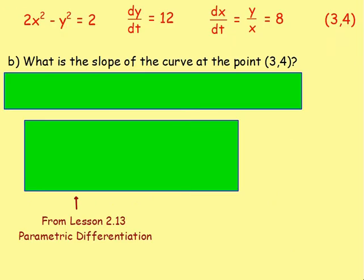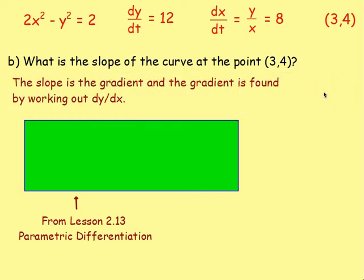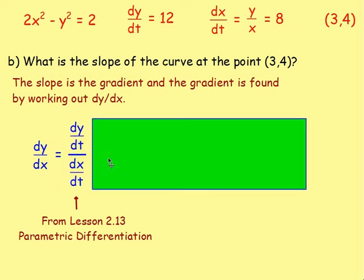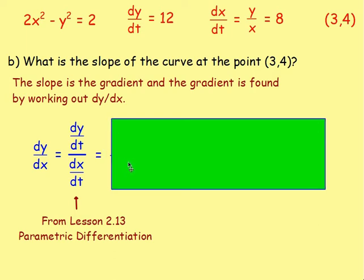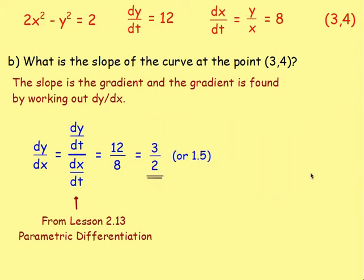For Part B, we need to find the slope of the curve at the point (3, 4). The slope is the gradient, found by the first derivative dy/dx. Recalling from Chapter 2, Lesson 13 on parametric differentiation: dy/dx = (dy/dt) ÷ (dx/dt). We have dy/dt = 12 and we just worked out dx/dt = 8. So dy/dx = 12/8, which simplifies to 3/2 or 1.5. That is the gradient of the curve at that point.